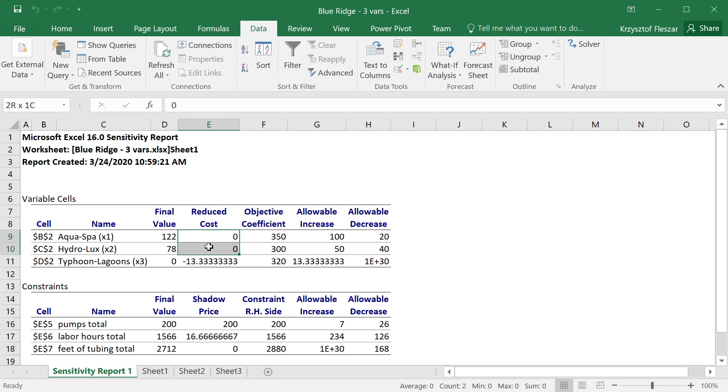So you see reduced costs are zero always when the decision variables are not set to their limits, in this case lower limits zero. And reduced cost has a meaning when a decision variable is at a limit, in general at a lower limit or an upper limit for this decision variable. Now we don't have upper limits here, we don't have maximum Typhoon Lagoon we can produce, but we have a lower limit of zero and the reduced cost minus 13.33 tells us why it is zero. So a reduced cost is kind of a negation of a trigger price change for the objective coefficient. If this objective coefficient for Typhoon Lagoon is improved by more than 13.33, the product would become profitable.